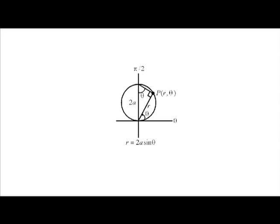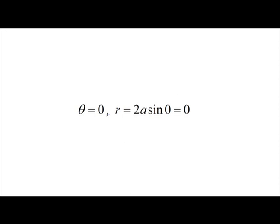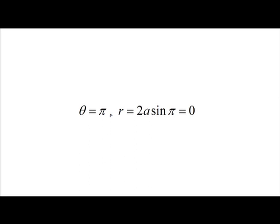We note that from the figure or from the equation: when theta is equal to 0, r is equal to 2a·sin(0) which is equal to 0, giving the point with Cartesian coordinates (0, 0). When theta is equal to pi by 2, r is equal to 2a·sin(pi/2) which is equal to 2a, giving the point with polar coordinates (2a, pi/2). When theta is equal to pi, r is equal to 2a·sin(pi) which is equal to 0, giving the point in polar coordinates (0, pi).